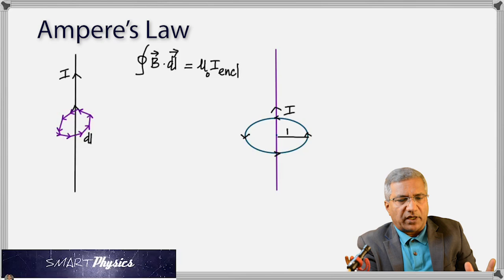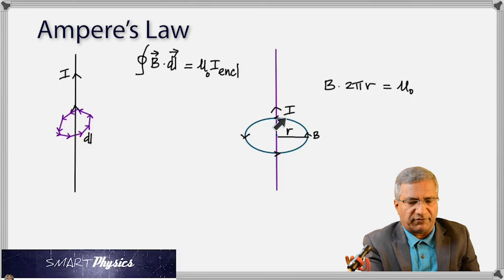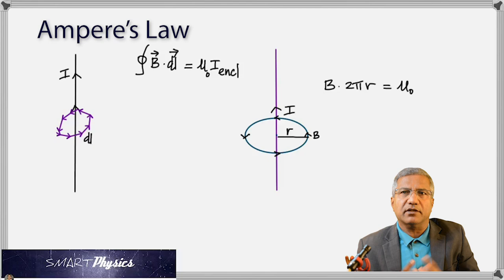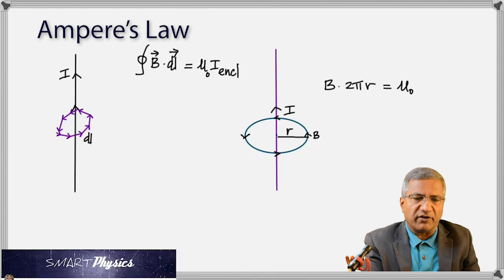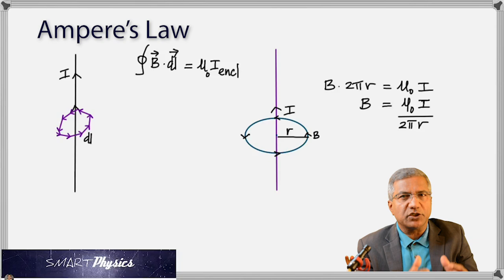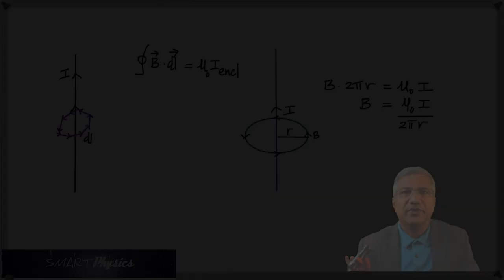Let the radius of that path be little r. Applying Ampere's law, B is constant at every point on the circle since all points are equidistant from the center. So B is taken out of the integral, giving B·∮dL = B·2πr = μ₀I. Rearranging, B = μ₀I/(2πr). This gives the magnitude of the magnetic field due to any straight conductor at a distance r, with direction given by the right-hand rule.